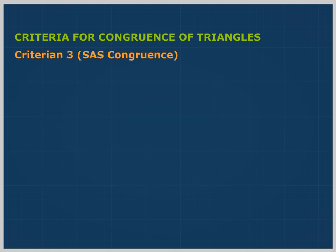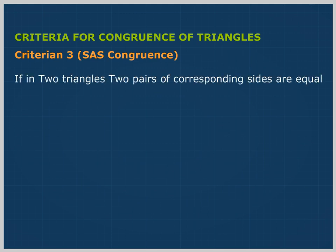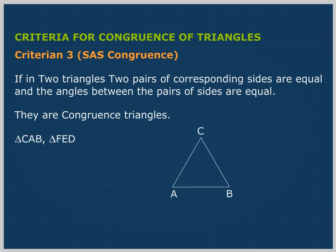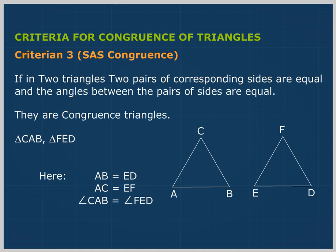Criterion 3: SAS Congruence. If in two triangles, two pairs of corresponding sides are equal and the angles between the pairs of sides are equal, they are congruent triangles. Here, AB equals ED, AC equals EF, and angle CAB equals angle FED. So, triangle CAB is congruent to triangle FED.